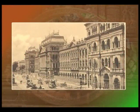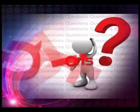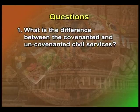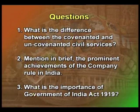Friends, in this lesson we have dealt with the East India Company 1600 to 1772, the Covenanted Civil Services, the Uncovenanted Civil Services, and prominent achievements of the Company Rule and others. Question number one: what is the difference between Covenanted and Uncovenanted Civil Service? Number two: mention in brief the prominent achievements of the Company Rule in India. Number three: what is the importance of the Government of India Act 1919?